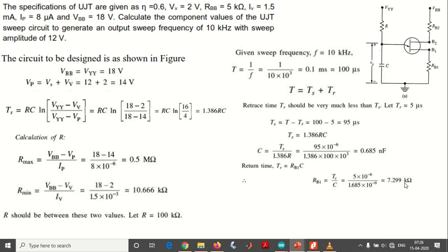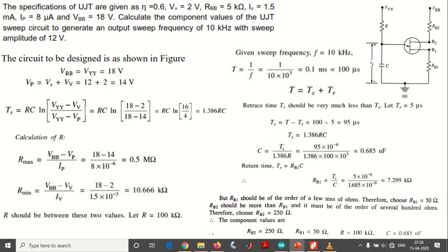But actually it should be very less because more current flows through RB1. It's calculated as 7.299 kilo ohms, but RB1 should be of the order of few tens of ohms. Therefore, we will choose RB1 as 50 ohms. RB2 should be more than RB1, so it must be in the order of several hundreds of ohms. We're choosing an approximation of RB2 equals 250 ohms. These assumptions can be made if sufficient data is not given. RB1 should be much smaller than RB2.